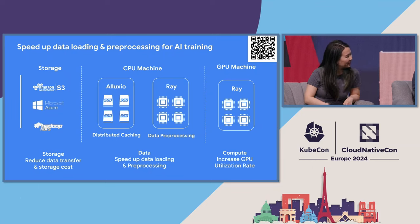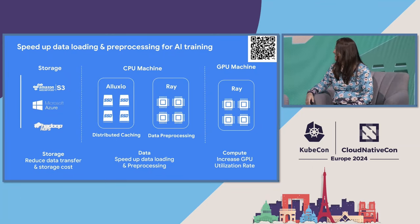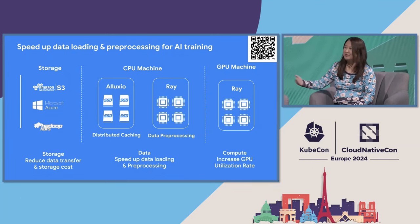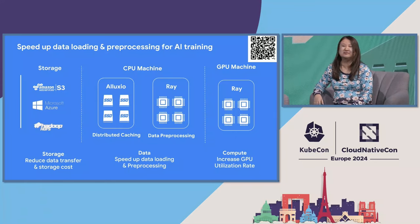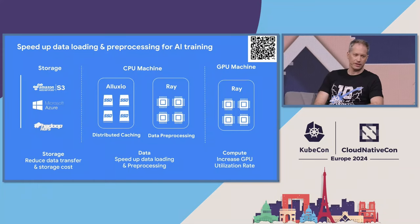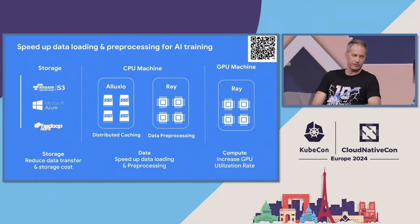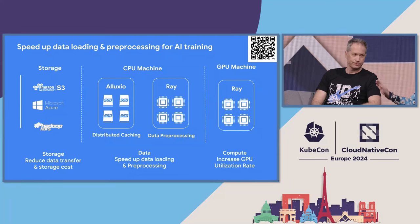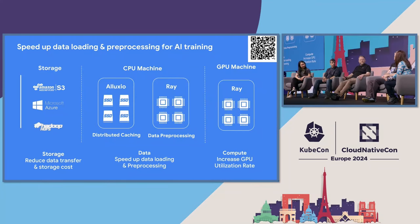There's a Ray operator for Kubernetes, and there are a lot of integrations coming with Ray and Kubernetes — a great opportunity to keep improving. Peter, we've talked a lot about accelerating AI performance in software. What can we do to optimize for sustainability?